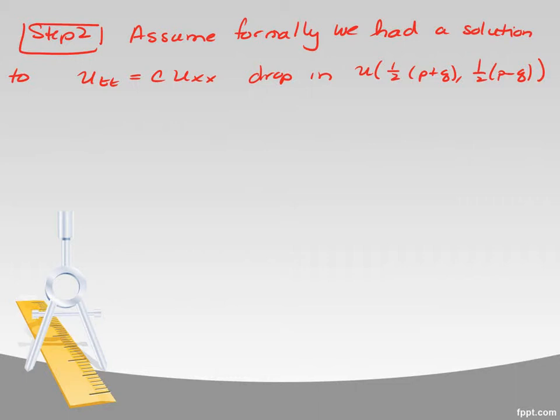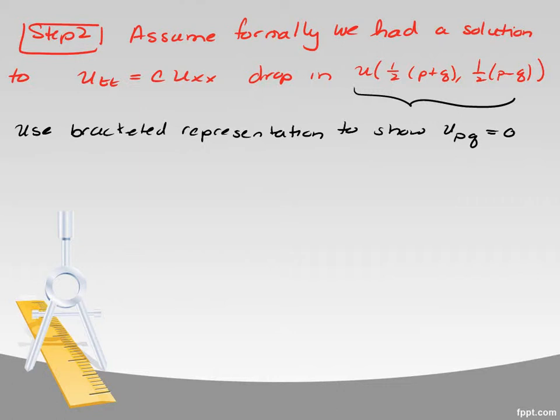So assume formally that we'd had the solution already and we made this change of variables. Then we could plug it into the equation and do some monkeying around. And the first monkeying around is to take that bracket expression and use that bracket expression to show that the mixed derivative u_pq is equal to zero. There's a reason why. So hold tight. So I'm just taking the mixed partials.